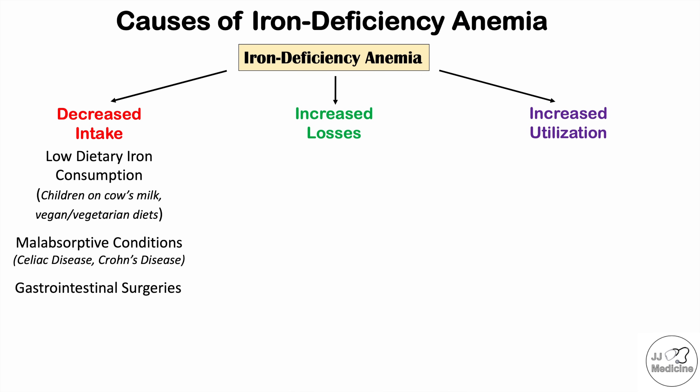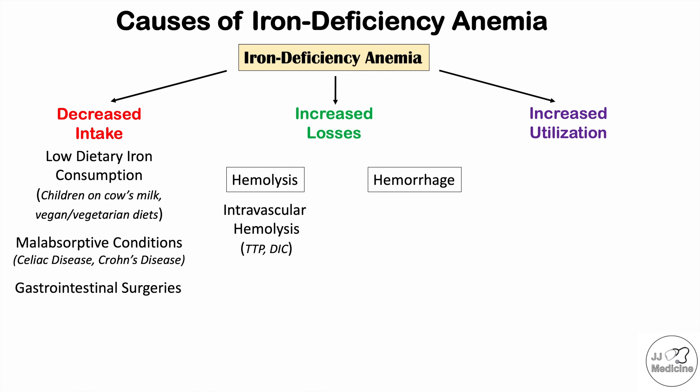Increased losses are broken down into two subcategories: hemolysis (breakdown of red blood cells) and hemorrhage (bleeding). In hemolysis, certain blood conditions lead to destruction of red blood cells through intravascular hemolysis. These include TTP (thrombotic thrombocytopenic purpura) and DIC (disseminated intravascular coagulation). Both can lead to breakdown of red blood cells, loss of iron, and eventual iron deficiency anemia.